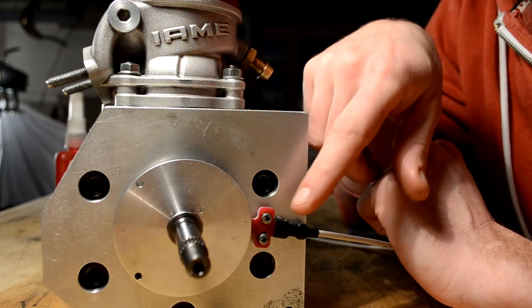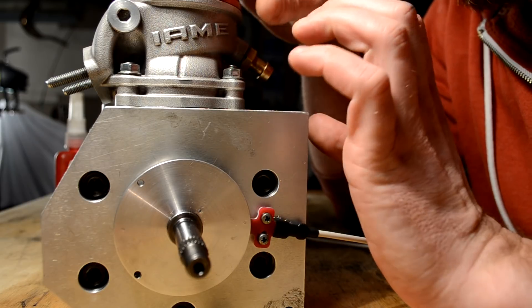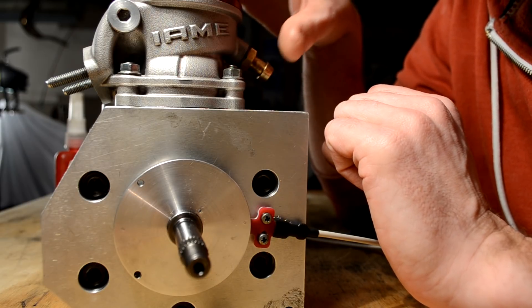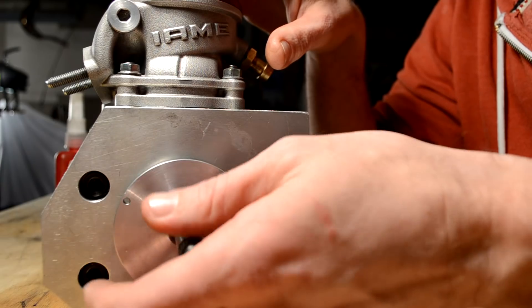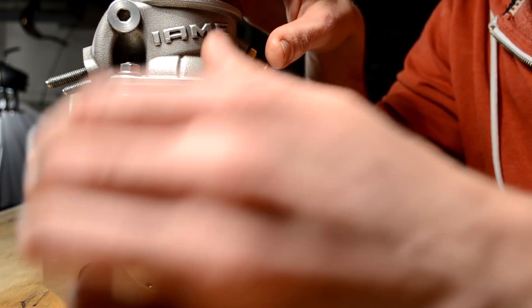As the power spark needs to sense the magnet 65 degrees before top dead center, I will have to set the crankshaft at 65 degrees before top dead center. Then set the magnet so that the sensor is sensing it and tighten it down.